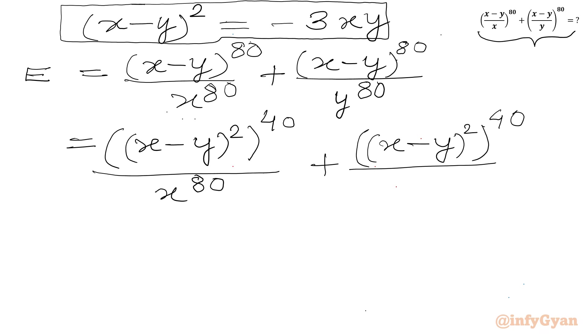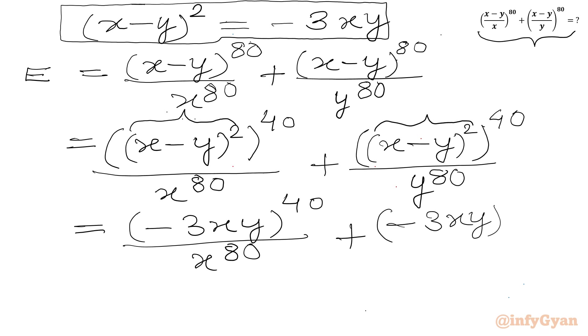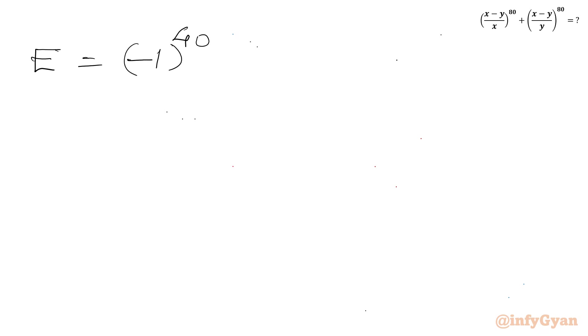Substituting equation 1, (x minus y)² = -3xy, we get (-3xy)⁴⁰ over x⁸⁰ plus (-3xy)⁴⁰ over y⁸⁰. Now we split using the exponential law: (a·b·c)ⁿ = aⁿ·bⁿ·cⁿ. So (-3xy)⁴⁰ expands to (-1)⁴⁰ · 3⁴⁰ · x⁴⁰ · y⁴⁰.